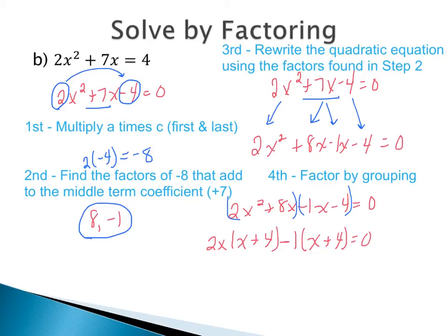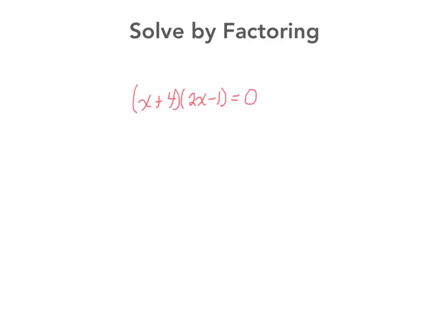Now using GCF again, I can see we have x plus 4 and x plus 4 — that's the greatest common factor. Taking out one x plus 4, we're left with 2x minus 1 as our second set of parentheses, still equal to zero. Now that we have the fully factored form, we continue to solve for x using the zero property of multiplication, setting each factor equal to zero: x plus 4 equals zero, and 2x minus 1 equals zero.